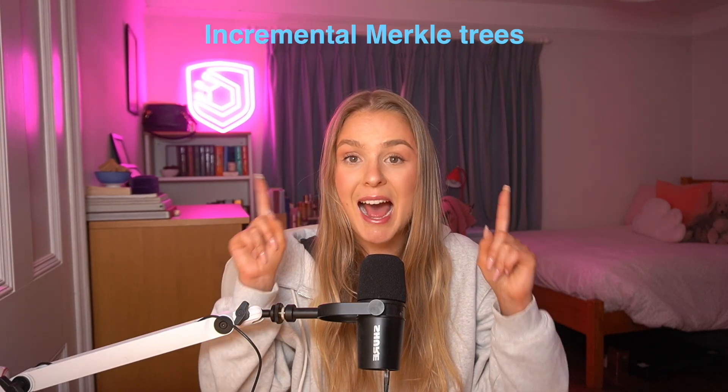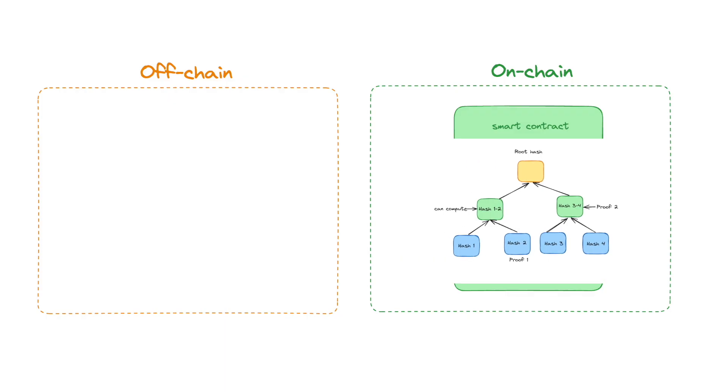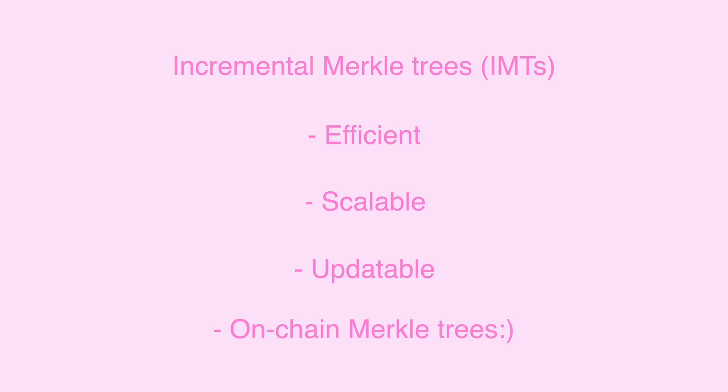In this video we are going to be going into incremental Merkle trees and how they actually work to enable us to have Merkle trees stored entirely on-chain and be updatable so that we can add values to our Merkle trees. Incremental Merkle trees, or IMTs, are the trick for efficient, scalable, and updateable on-chain Merkle trees. You can think of this video as your technical deep dive into IMTs — what they are and how they work conceptually — so that when you're trying to understand how blockchains like ZK Sync work or how applications like Tornado Cash work, this video will be very helpful.